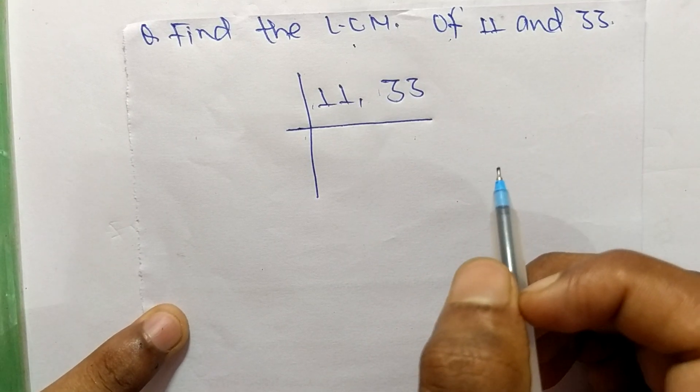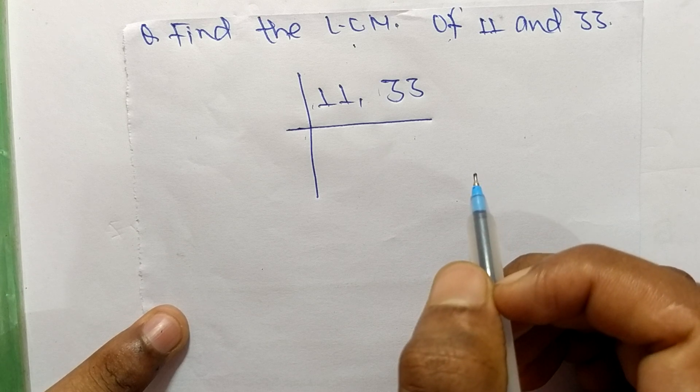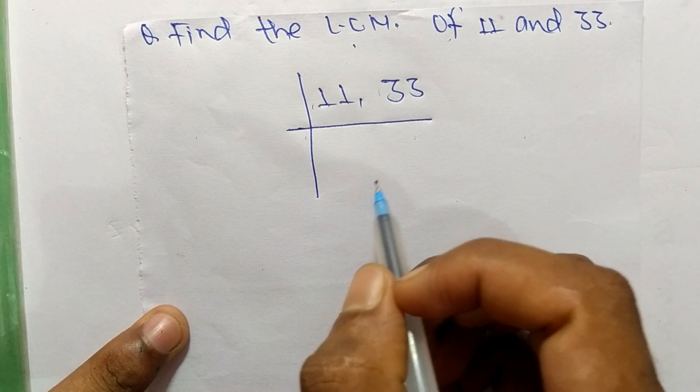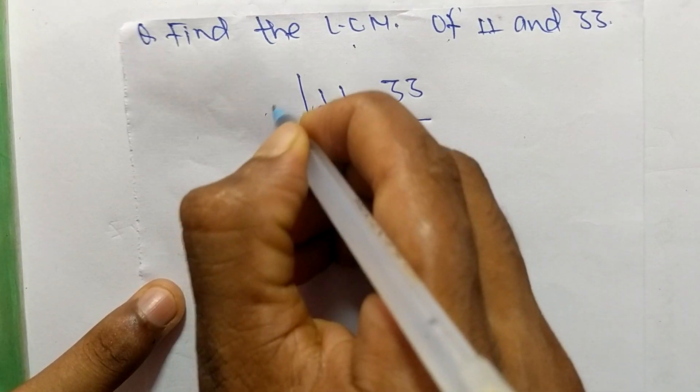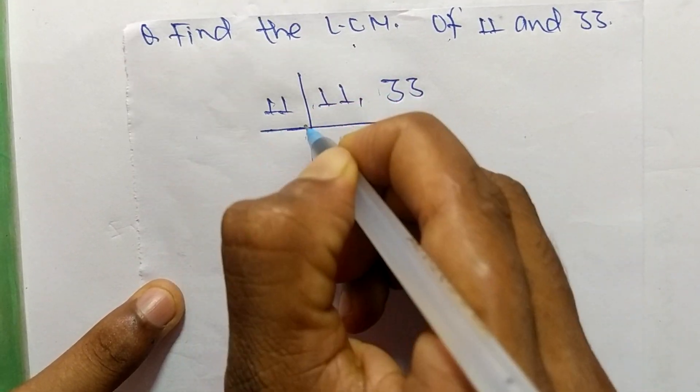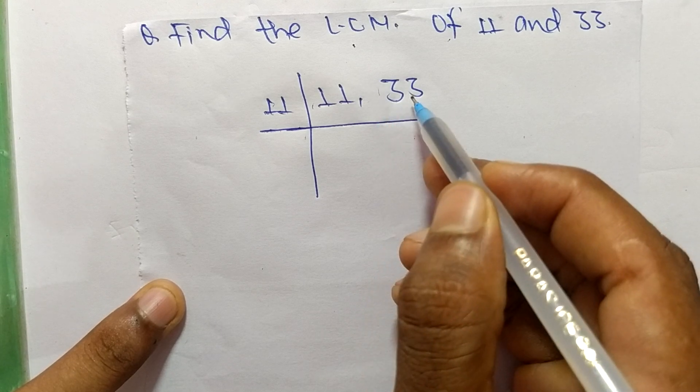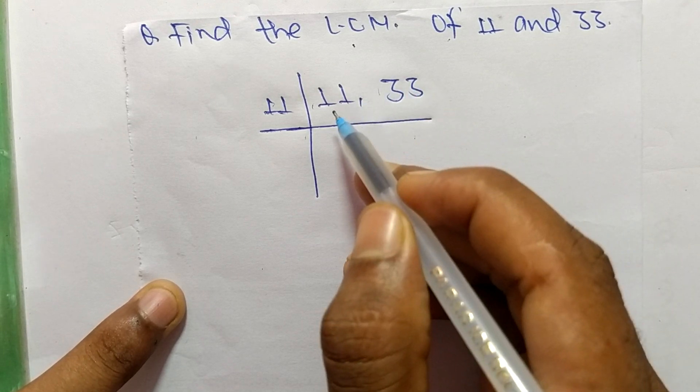To find LCM, first we choose the lowest number which can exactly divide 11 and 33. The number we get is 11. If we take 3, then 3 can divide 33 but can't divide 11.